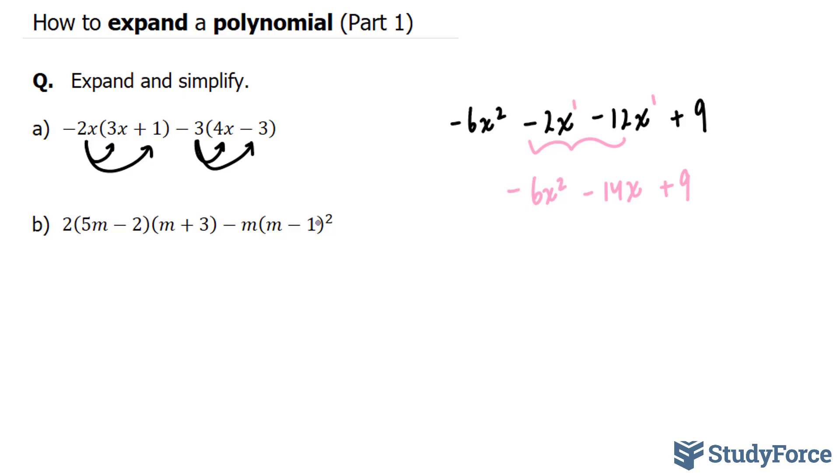There are many ways to approaching this, but what I would do first is multiply this 2 to the first two terms and then enclose the product in brackets themselves. Let me show you what I mean. So 2 times 5m gives us 10m and 2 times negative 2 gives us negative 4.